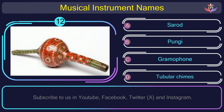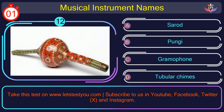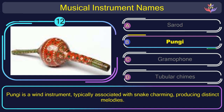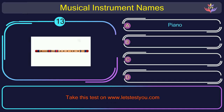Question number 12. Can you name the musical instrument you see in this picture? The correct answer is option B: Pungle. Pungle is a wind instrument typically associated with snake charming, producing distinct melodies.